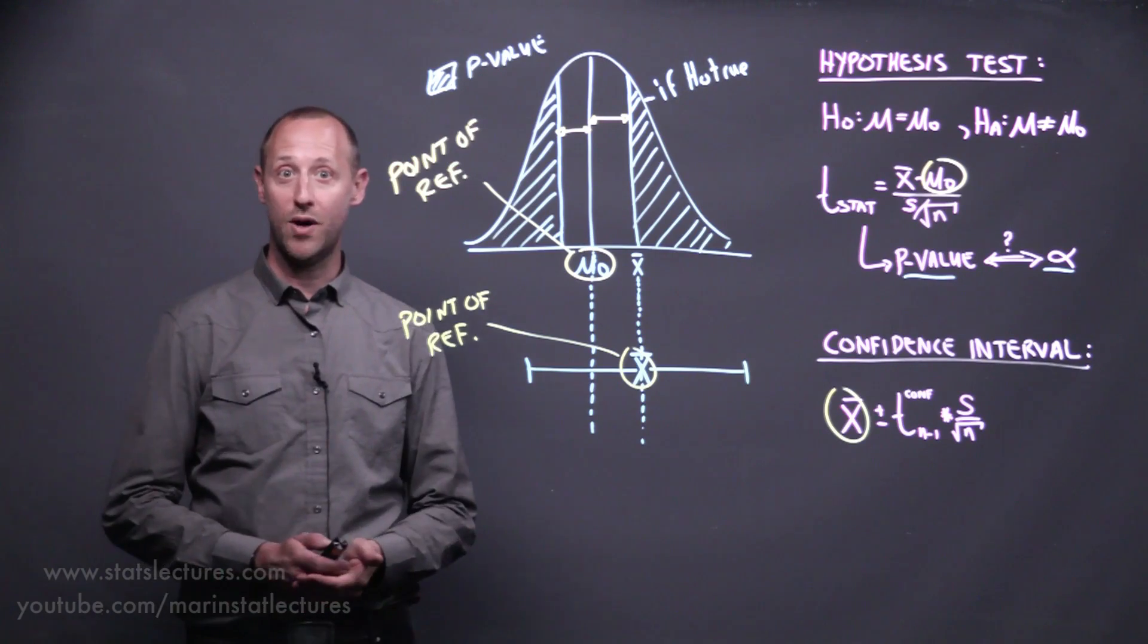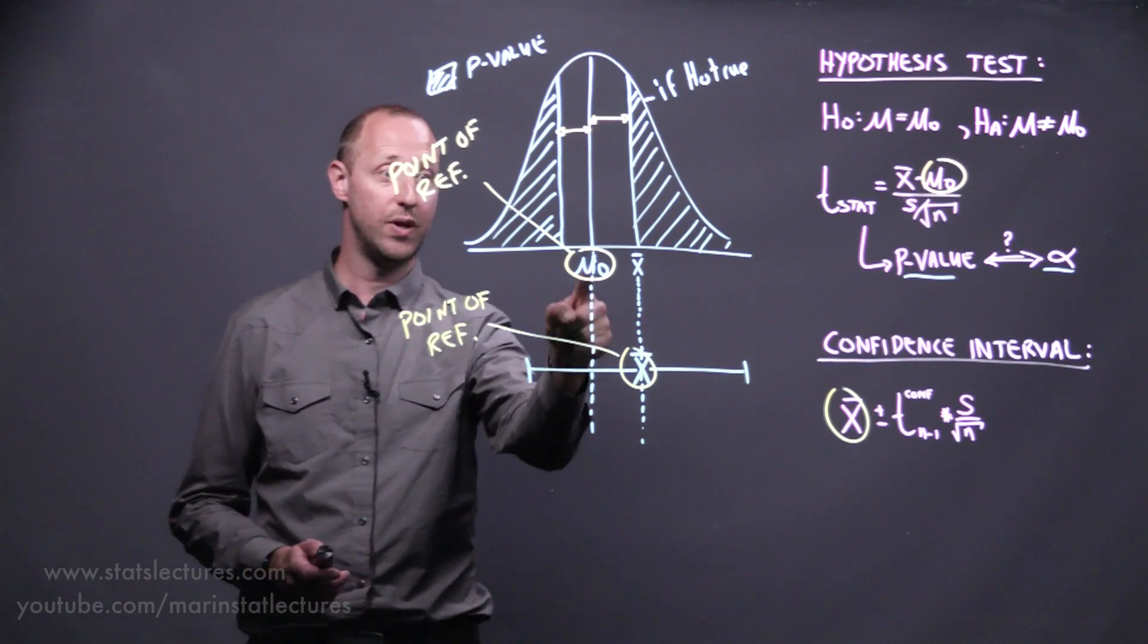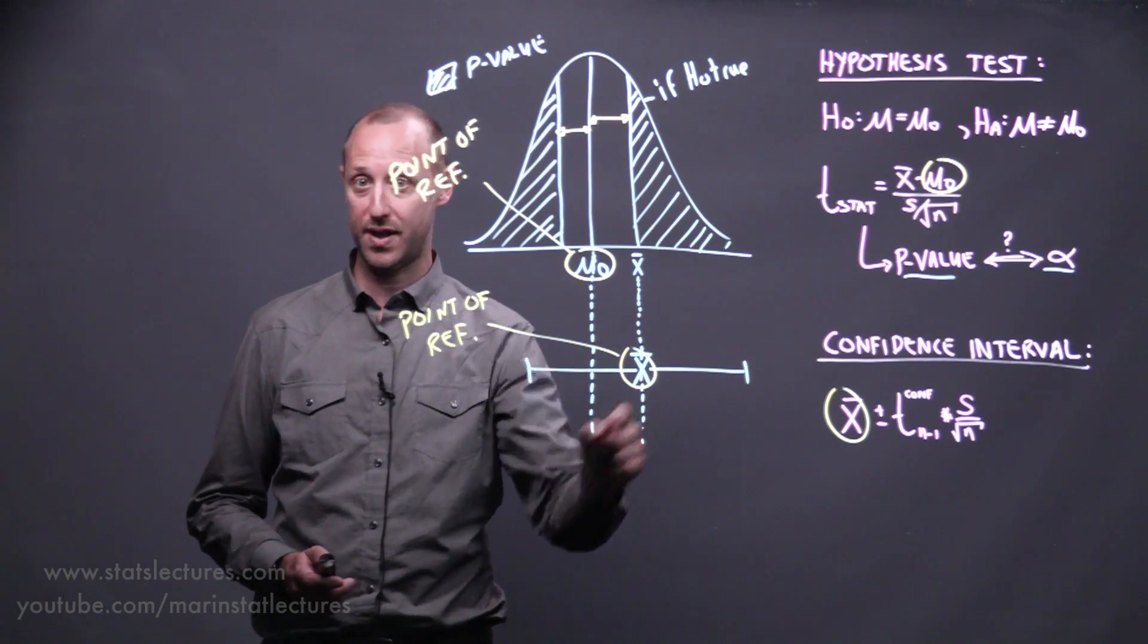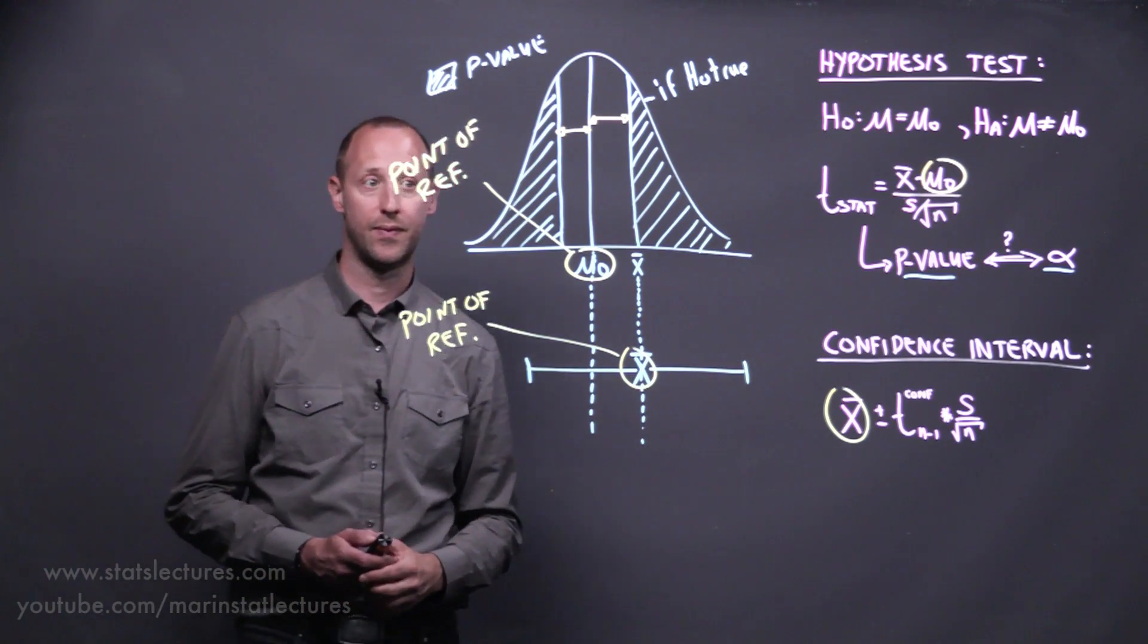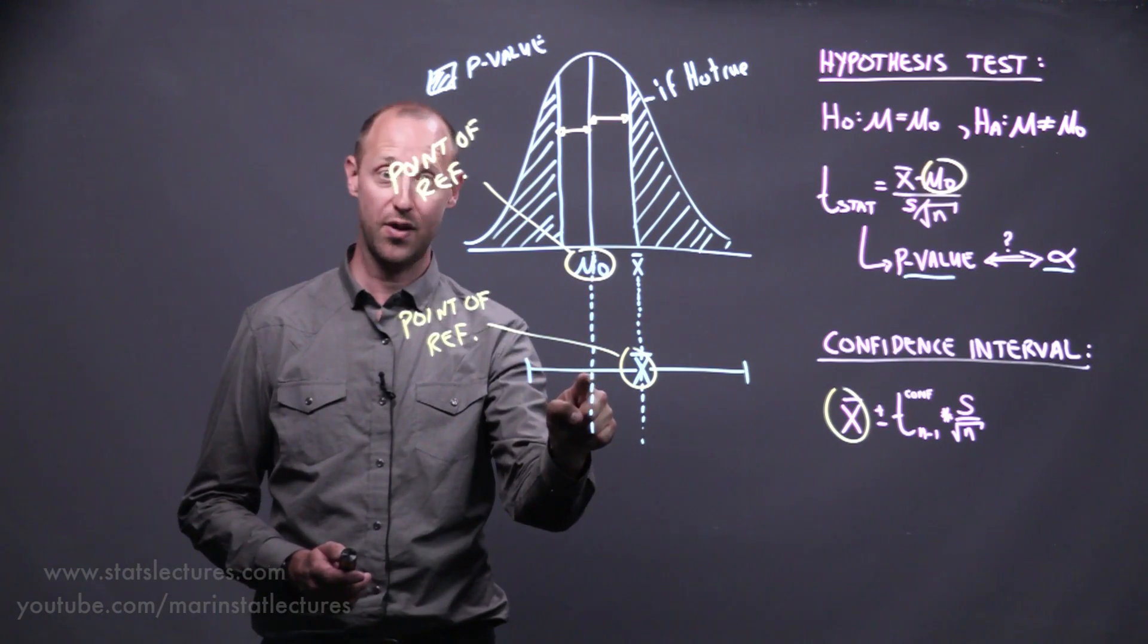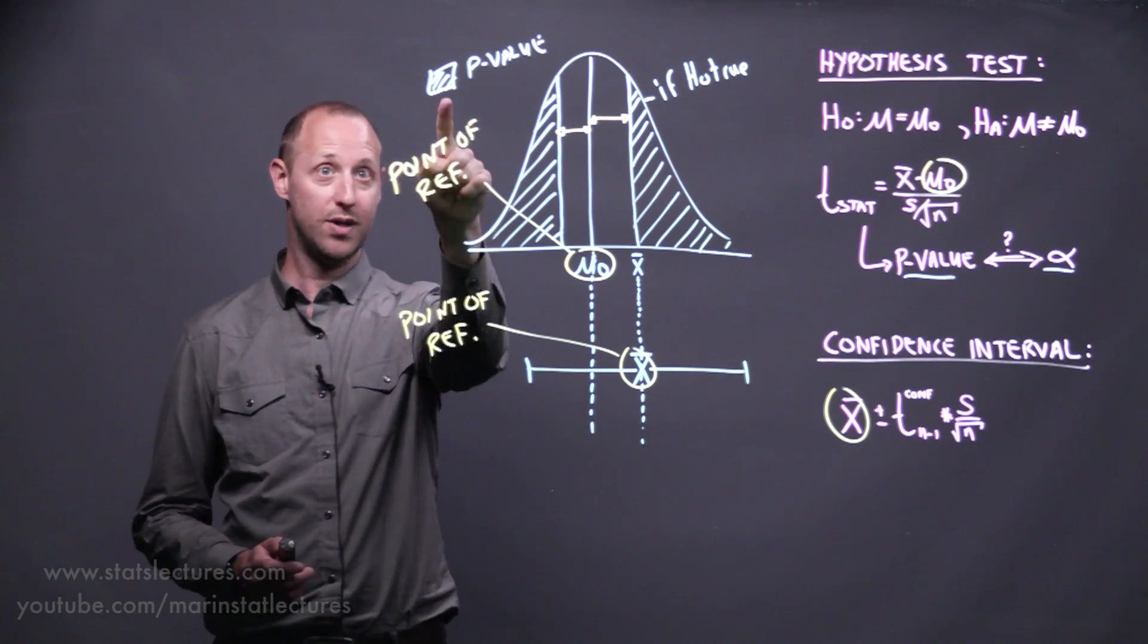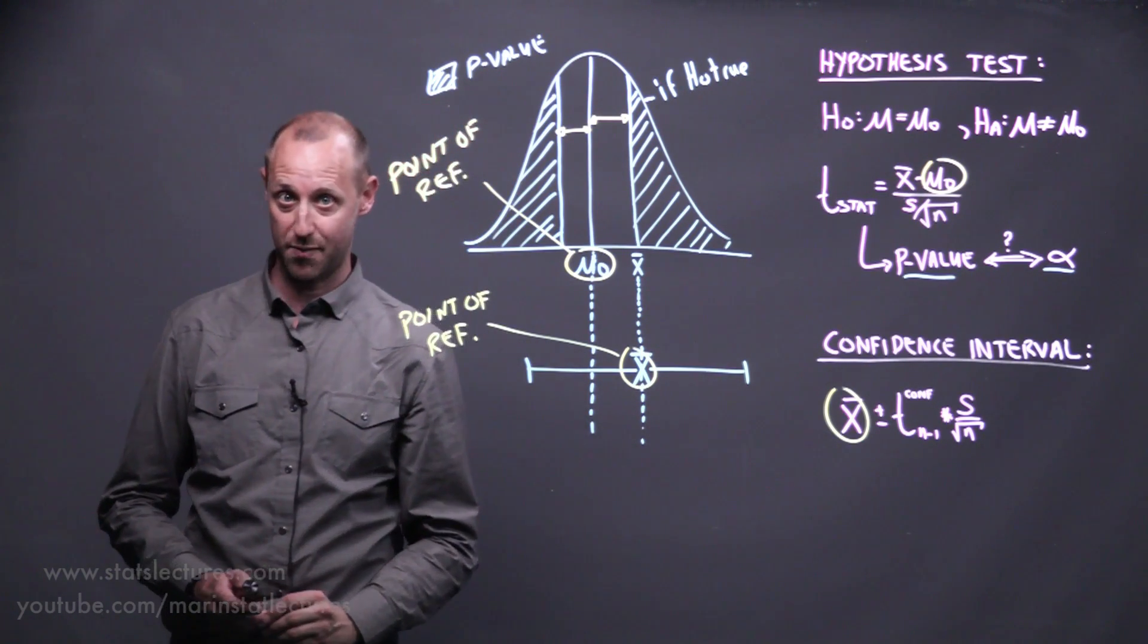So if we want to use the confidence interval as a hypothesis test, we can check: does the null value fall within that confidence interval? If the null hypothesized value falls within the confidence interval, then the p-value is always going to be larger than that alpha of 5%.